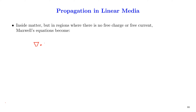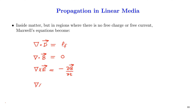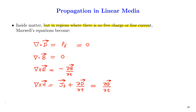Inside matter, Maxwell's equations become: del·D = ρ_f, del·B = 0, del×E = −∂B/∂t, and del×H = J_f + ∂D/∂t. If we assume the dielectric contains no free charges or free currents, the first equation becomes del·D = 0, the second and third remain the same, and the fourth becomes del×H = ∂D/∂t. These are the equations inside matter devoid of any free charges or free currents.